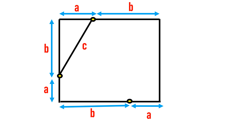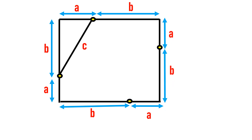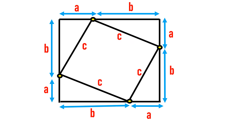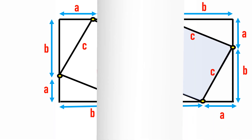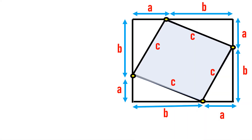Similarly, on all remaining two sides we select the points with distances a and b from both sides. Joining all these points, we find a smaller square inside the bigger square. The bigger square has side a plus b and the smaller square has side c. The area of the smaller square is c squared.